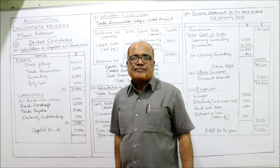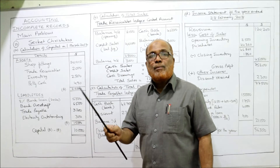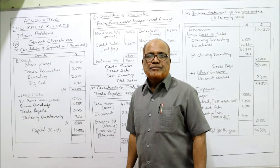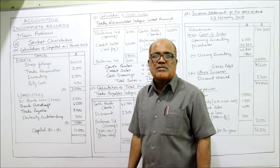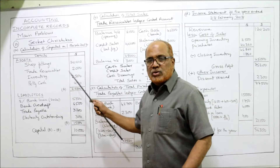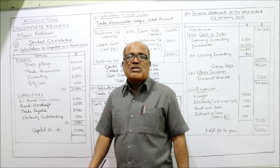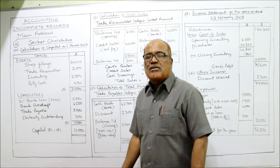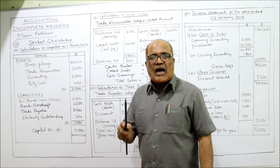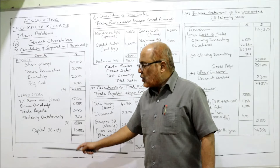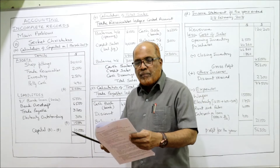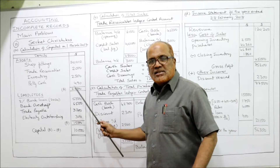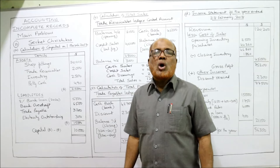Trade payable is the amount due to suppliers — it is a liability, so Trade Payable $3,200 goes to liabilities. Trade receivable is the amount due from customers — that's an asset, so Trade Receivable $2,000 goes to assets. Electricity outstanding means the amount due to the electricity department, so it is a liability. Petty cash means cash in hand — it's an asset.